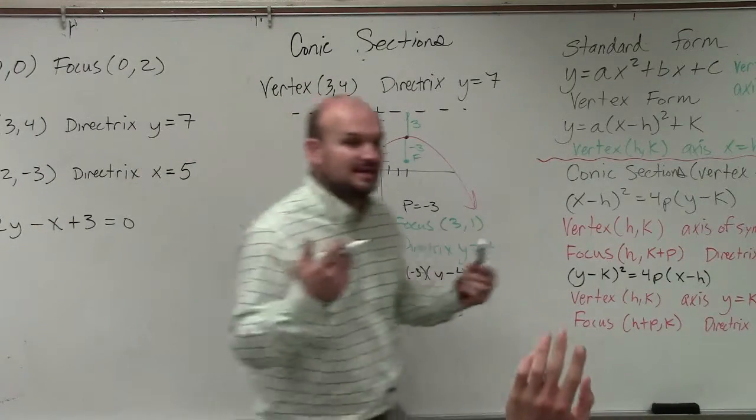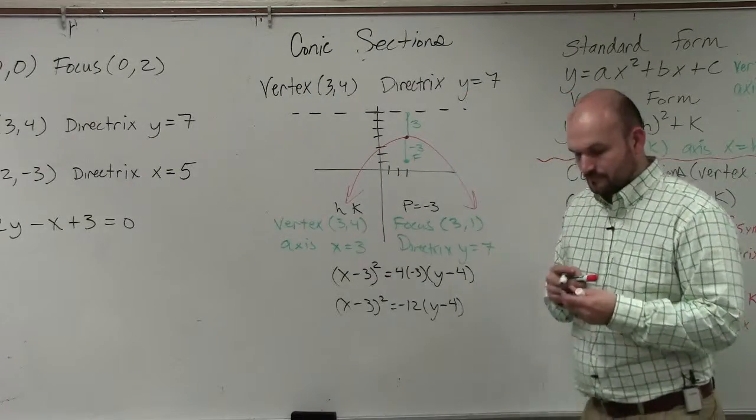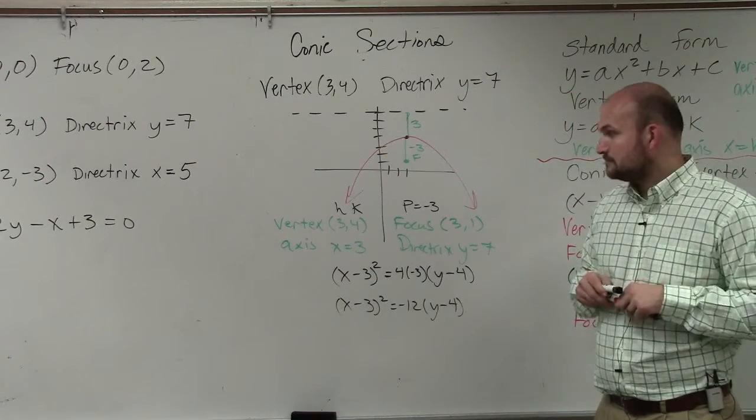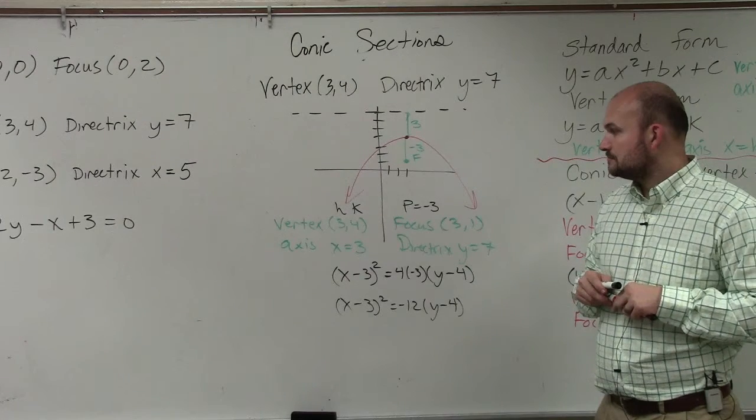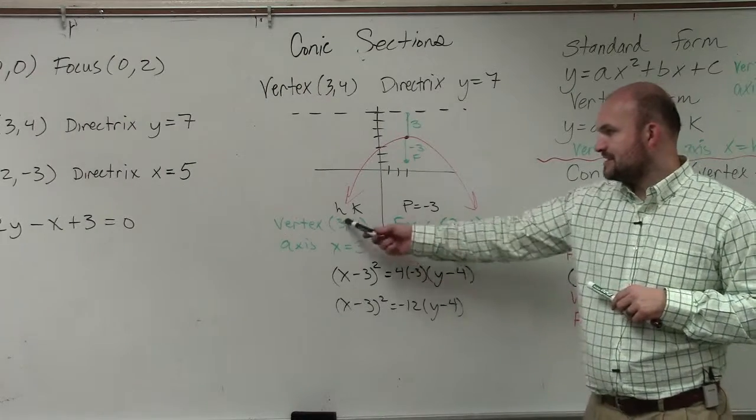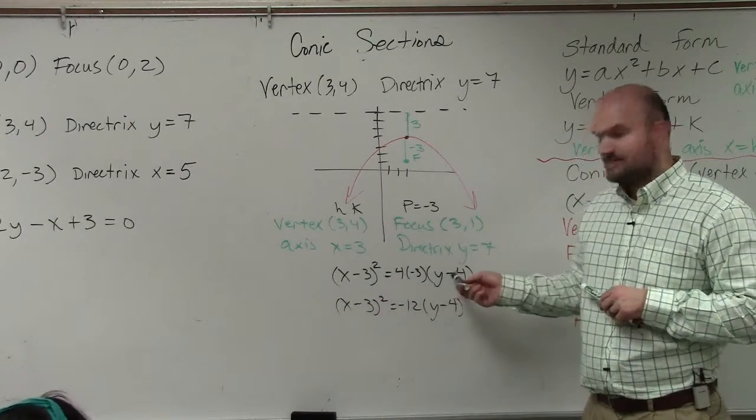Now, based on our understanding, yes? If p is negative 3, you do x minus h, so it would be plus 3, right? No, it's still x minus h, x minus k. So it would be x minus 3, x minus 4.